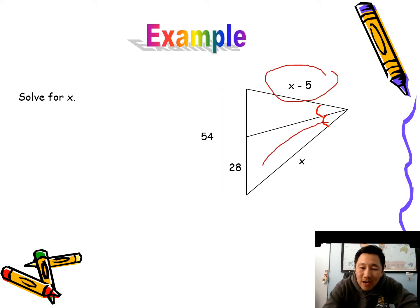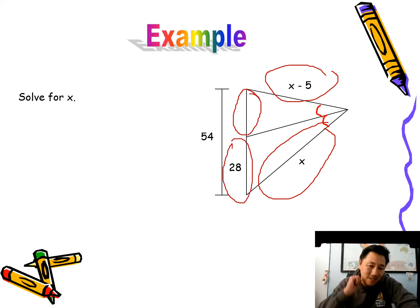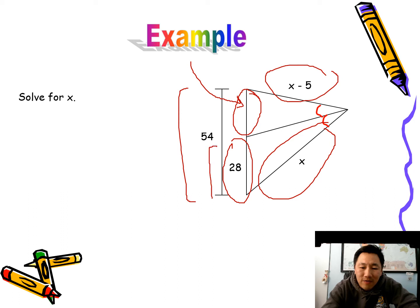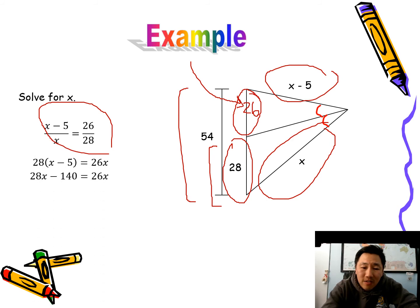So then we can set up the proportion. We can do the X minus 5 over the X, and then—oh no, we need this over the 28. So actually, we have to find this little piece first. That's pretty easy to find. The whole thing is 54, this part of it is 28, so if you subtract it you should get 26. So the 26 is right there. And then there's the setup. Solve: cross multiply, distribute, solve it out. We get X equals 70.